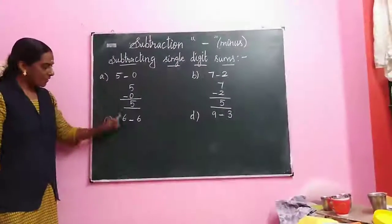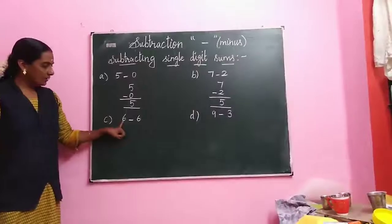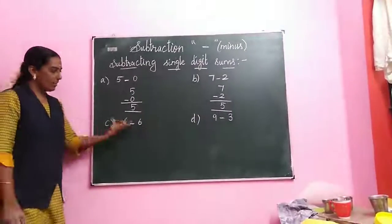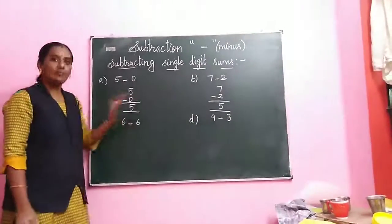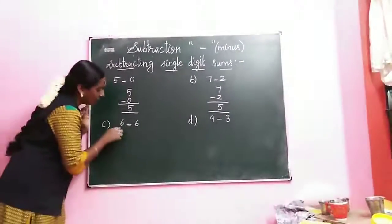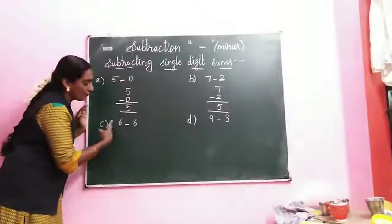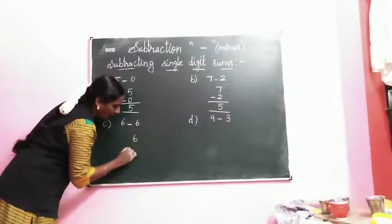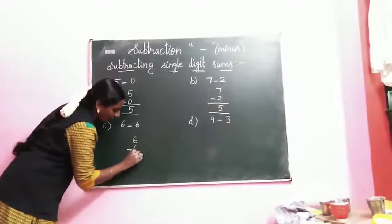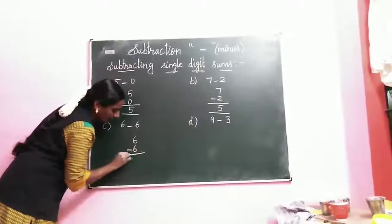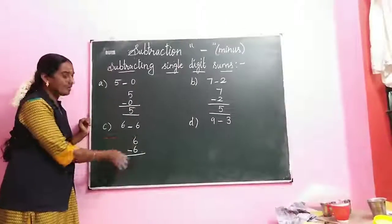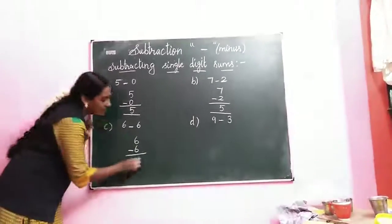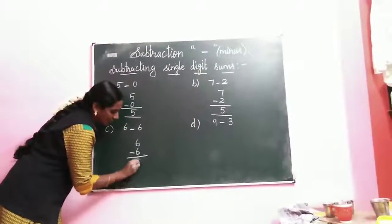Next sum: 6 minus 6. Here we have the same number. When we subtract the same number from itself, the answer is 0. So 6 minus 6 equals 0.